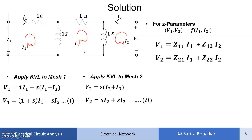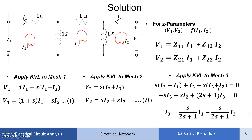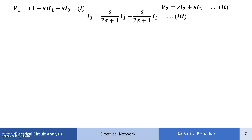Applying KVL to loop 3: S·(I3 − I1) + S·(I3 + I2) = 0. We solve this to find I3, because we want to express V1 and V2 in terms of I1 and I2 only, so we must eliminate I3 by substituting from equation 3 into equations 1 and 2.